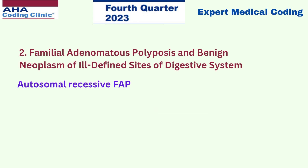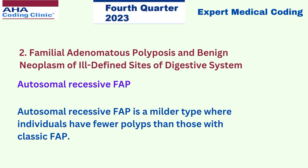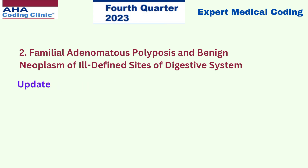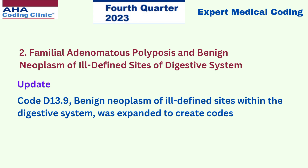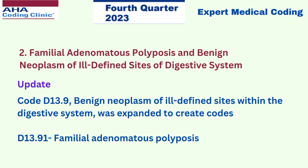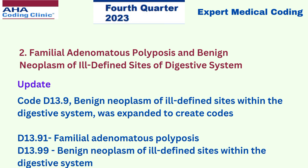Autosomal recessive FAP is a milder type where individuals have fewer polyps than those with classic FAP. The update here is that code D13.9 — benign neoplasm of ill-defined sites within the digestive system — was expanded to create two new codes: D13.91 for familial adenomatous polyposis, and D13.99 for benign neoplasm of ill-defined sites within the digestive system.